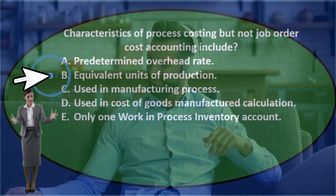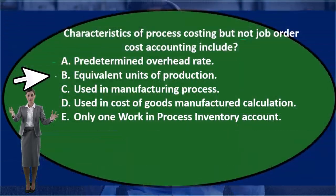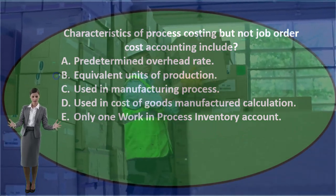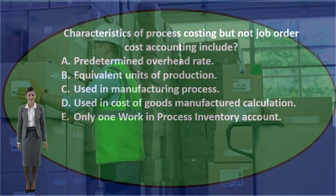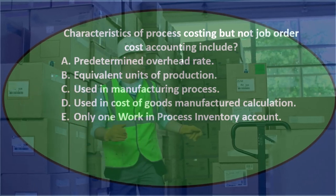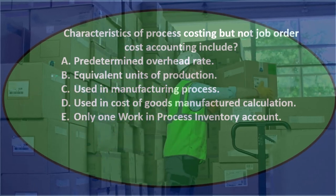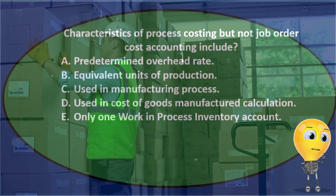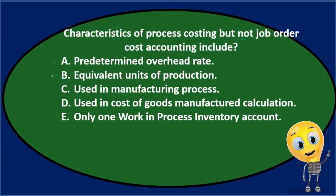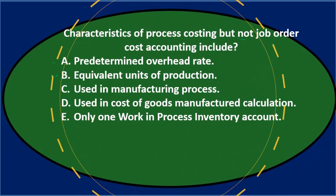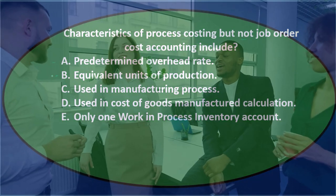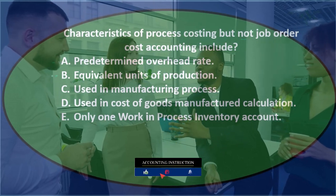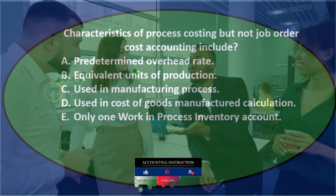Option B, equivalent units of production — we might be a little confused about which system that applies to. We typically do use equivalent units of production in a process cost system to allocate costs between the different processes. We're not sure if it's also in a job cost system, so keep that for now.